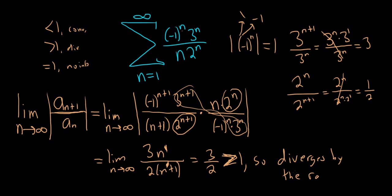Rather, greater than 1 by the ratio test. If it's equal to 1, we have no information. So it's actually greater than 1, and that will give us divergence.